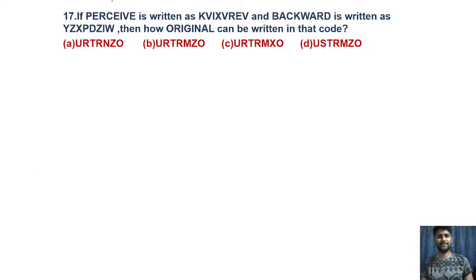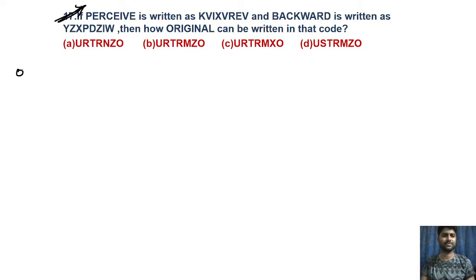Next coding and decoding: using P-K (Pawan Kalyan), E-V (electrical vehicle), I-R (Indira Gandhi, Rajiv Gandhi) — same opposite pair logic. The question asks what is the code language for 'original.' The logic is opposite pairs only.